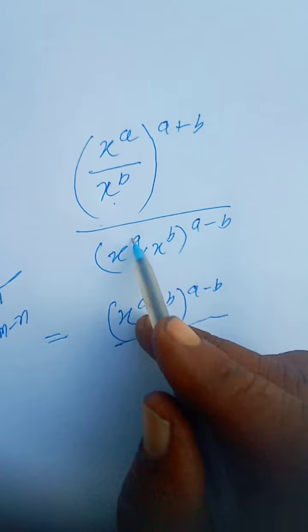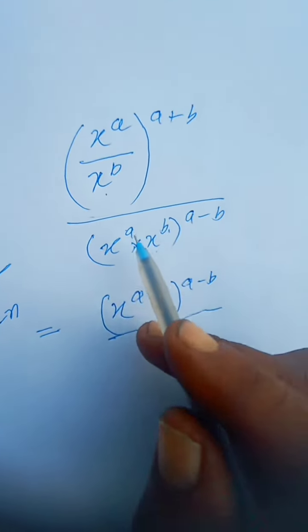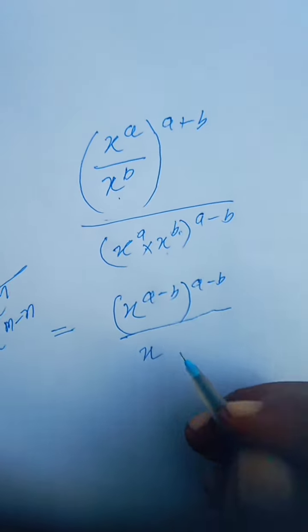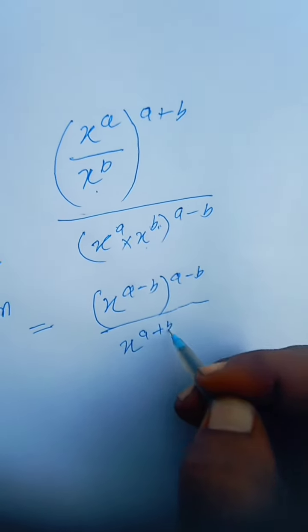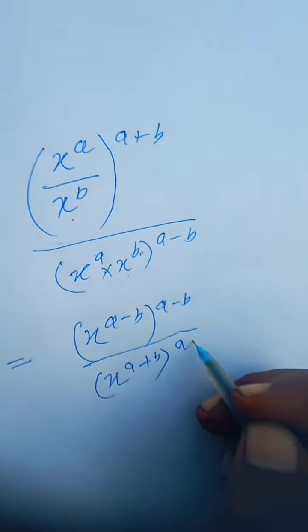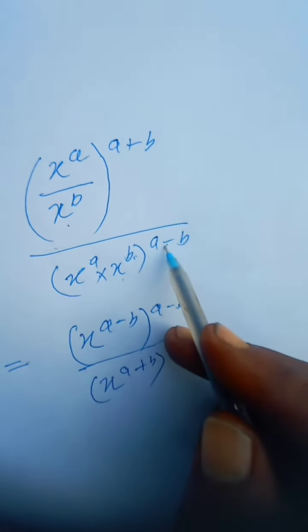Here x to the power a and x to the power b. When bases are same, then powers are added. It will be x to the power a plus b, and whole power a minus b as it is given. Right?